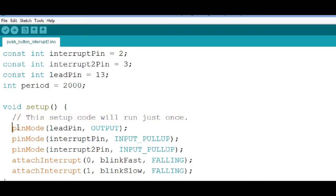So pinMode for the LED pin, he's an output to drive the LED. pinMode for the interrupt pin, he's an input with a pull-up resistor. pinMode for interrupt 2 pin, he's also an input with a pull-up resistor. And now we're going to attach our two interrupts.